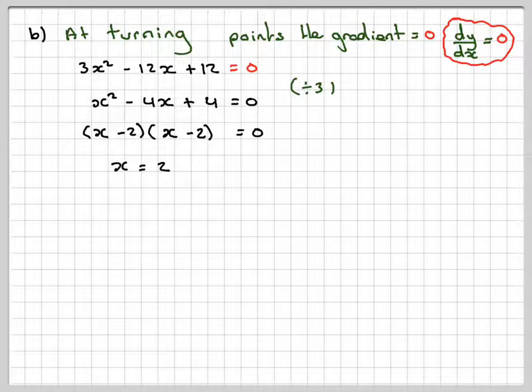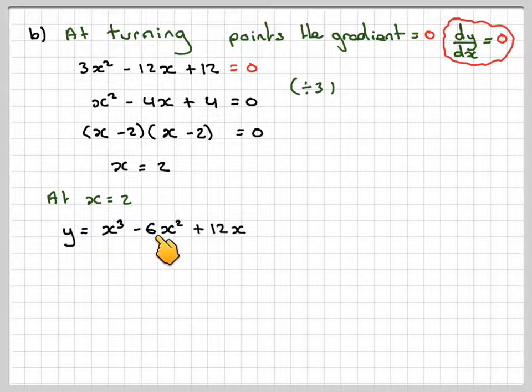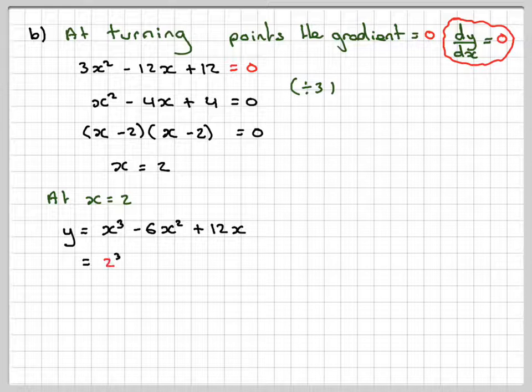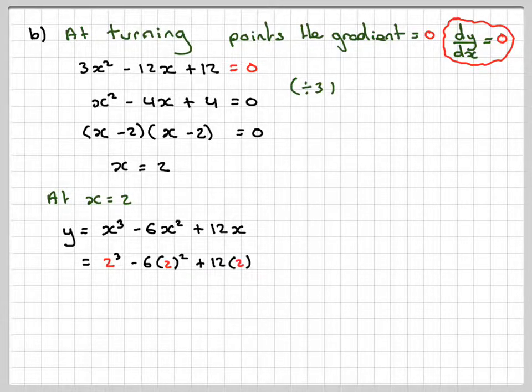We're going to get x is equal to 2. So if we put x is equal to 2 into the original function, y is equal to x cubed minus 6x squared plus 12x, we get 2 cubed minus 6 times 2 squared plus 12 times 2.